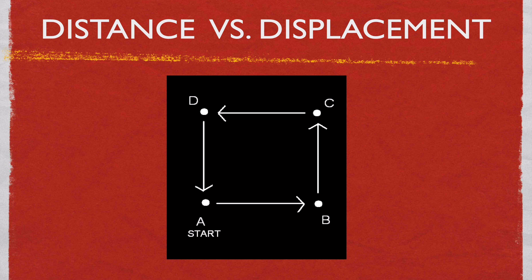For example, we have this diagram here where we start at position A, go to position B, go to position D, then go to C and D, and then go back to A. What would your distance be in that case, and what would your displacement be in that case?